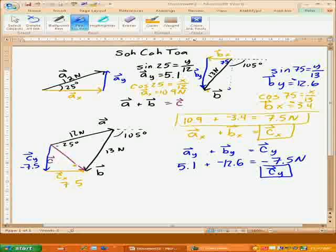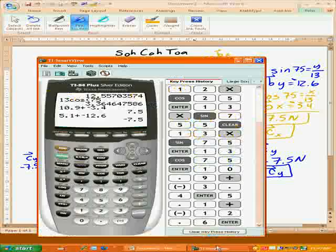Now you should be able to get the magnitude pretty easily. It's just Pythagorean theorem. You know that X and Y will always be a right angle. So you should be able to do 7.5 squared plus 7.5 squared, get the answer, and then square root it. Let's go ahead and do that.